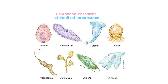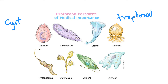Let's look at the protozoal parasites. Protozoal parasites are single-celled parasites. The two most important stages of development you need to know are the cyst and the trophozoite. I'm simplifying it — in some cases there are a lot of stages of development, but we're just going to talk about the cyst and the trophozoite.